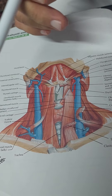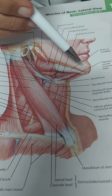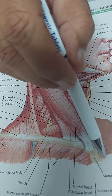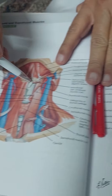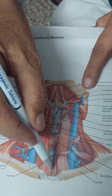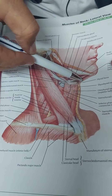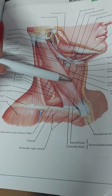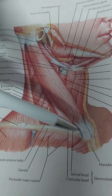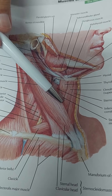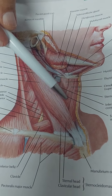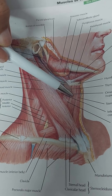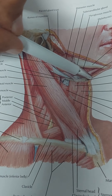Now the boundaries of the muscular triangle are as follows. The anterior boundary is the midline, running from the chin downward to the sternum at the jugular fossa or jugular notch. The posterior-inferior boundary is formed by the anterior border of the sternocleidomastoid muscle. The upper or superior boundary is formed by the superior belly of the omohyoid muscle.